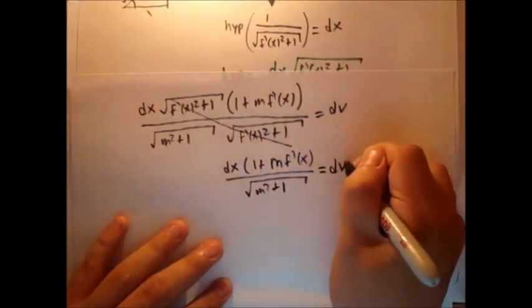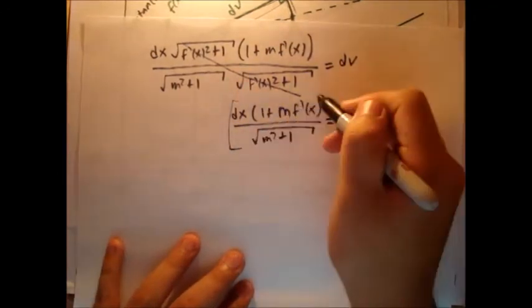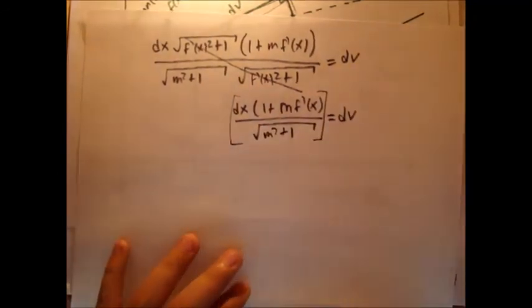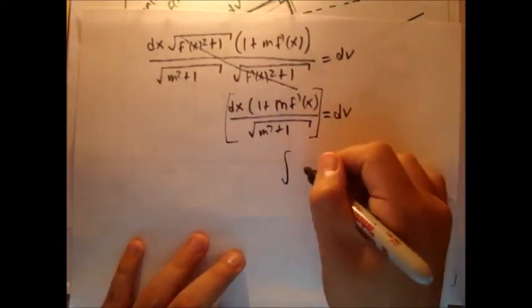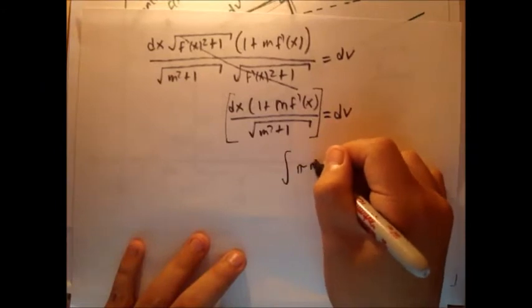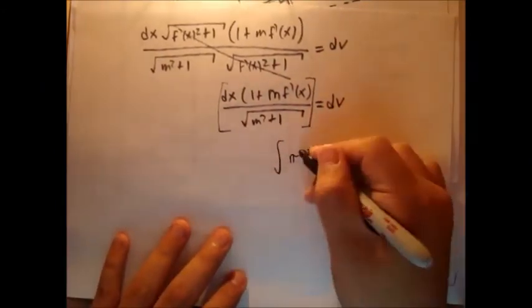So now we have dx 1 plus m f prime of x divided by square root m squared plus 1 equals dv. So now remember, this equals our little width. It's still insignificant, but the width still existed. Now remember, when we originally did this method, it was simply this.